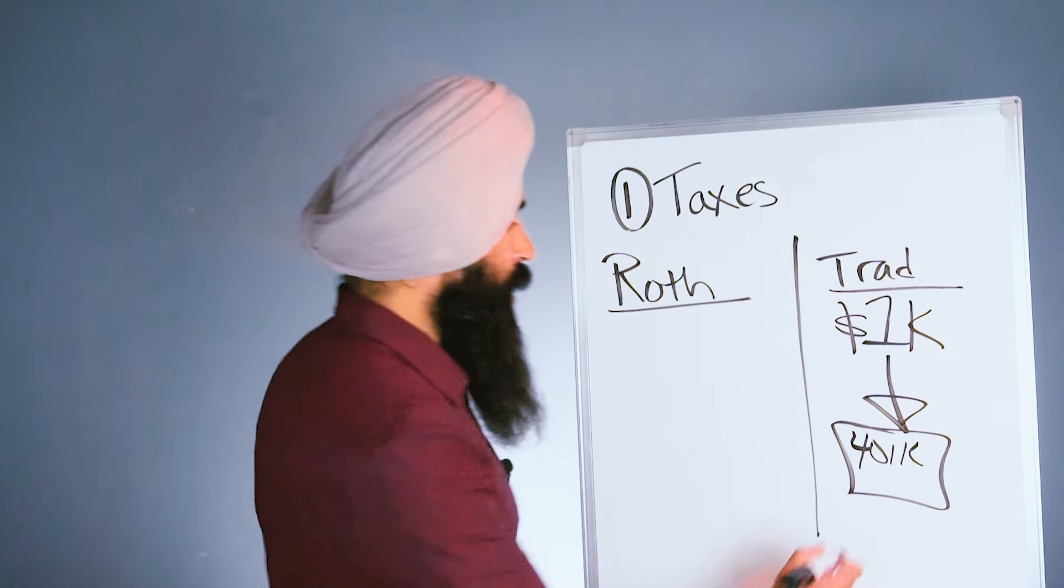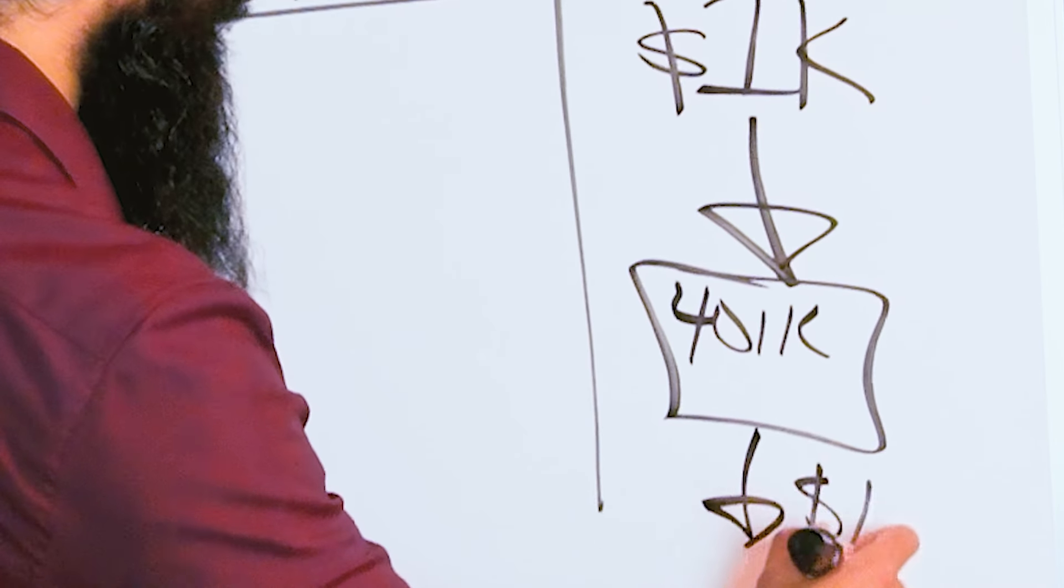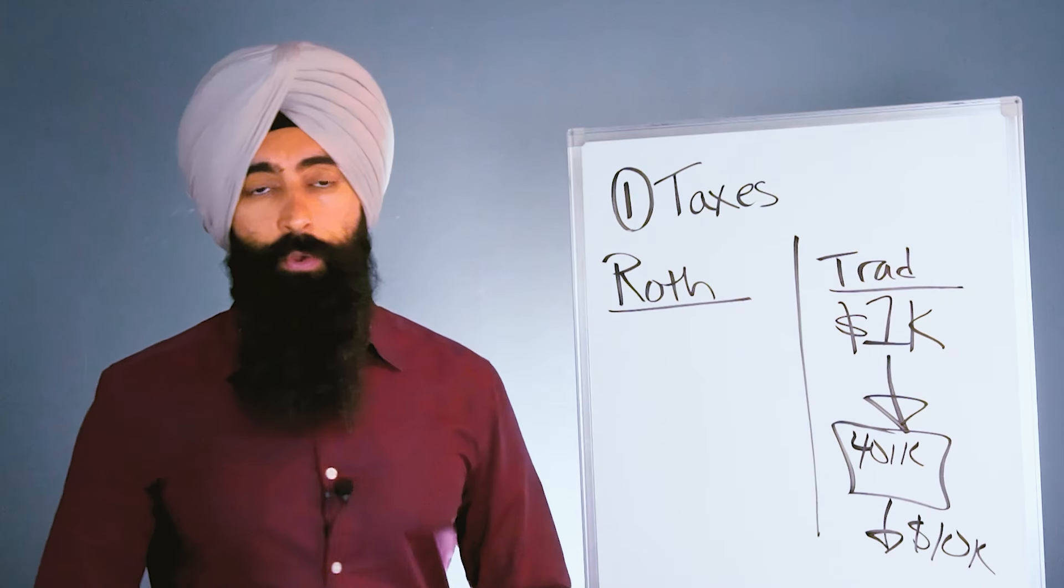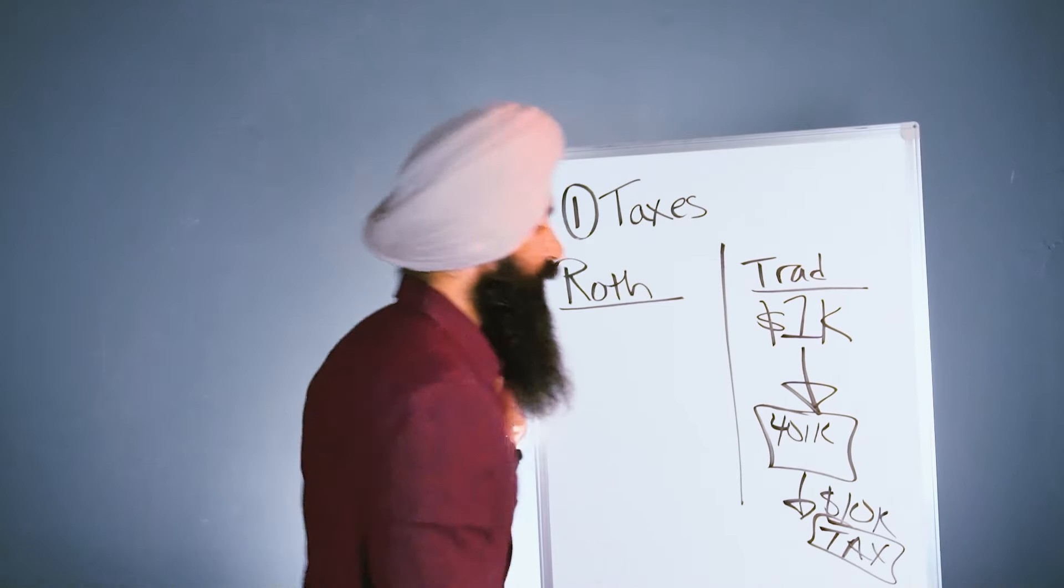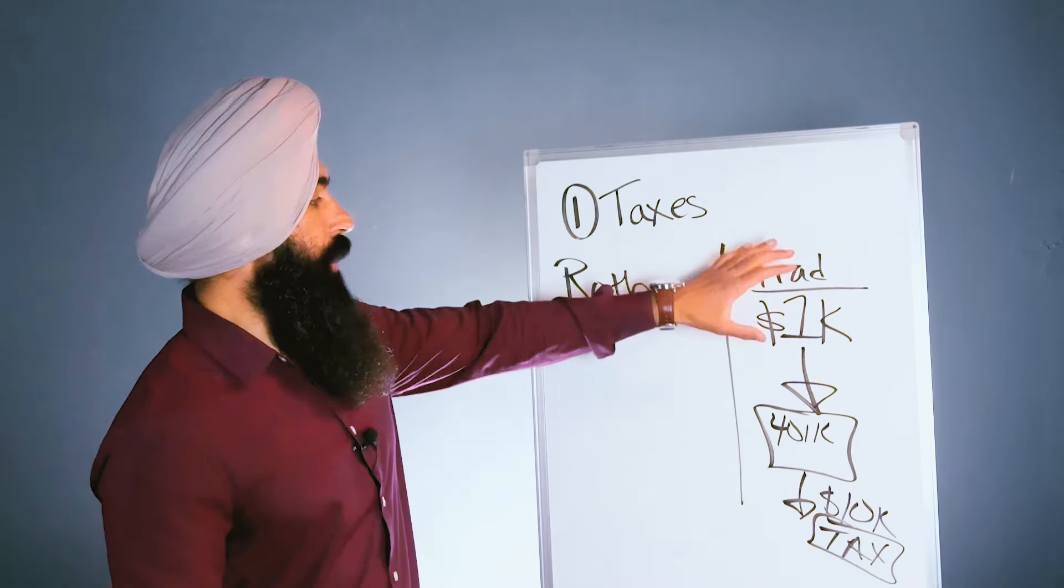You pull out $10,000 from your 401k, and that's when this money is going to be taxed. So you get taxed when you pull the money out, but all $1,000 gets to go into the 401k initially.